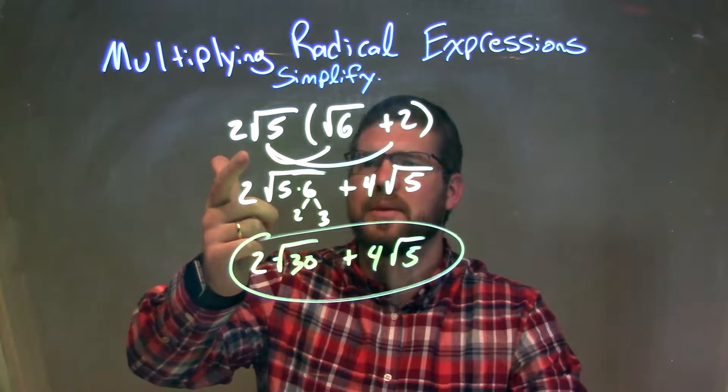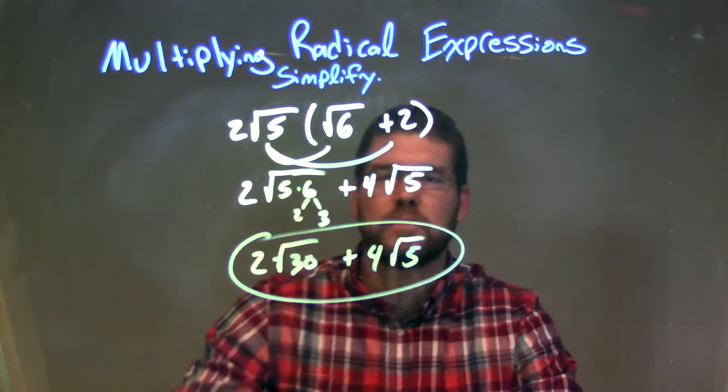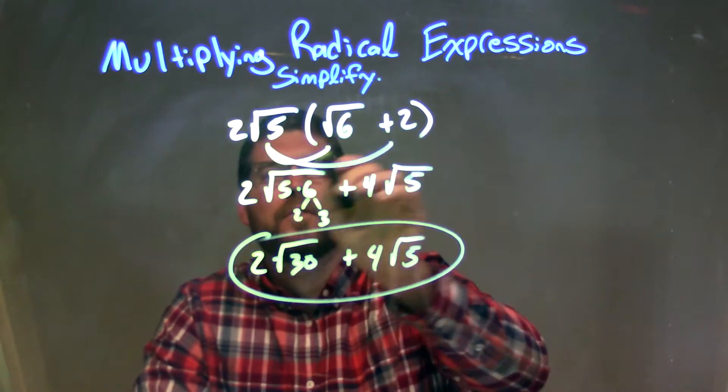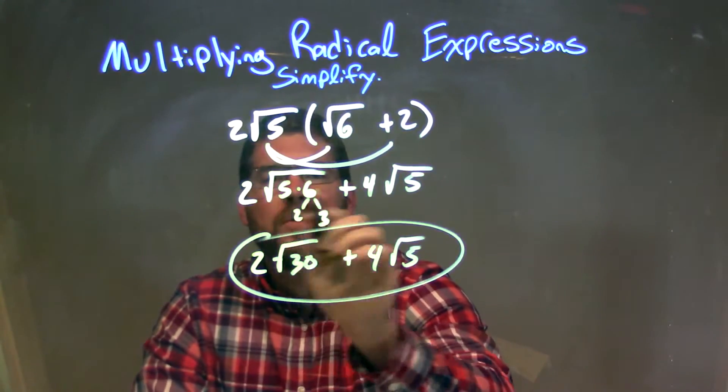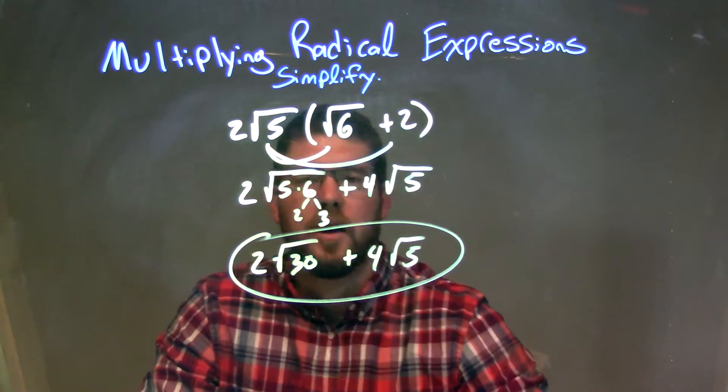So let's recap. We're given 2 times the square root of 5, times parentheses, square root of 6, plus 2. We're distributing the 2 square root of 5 with both parts, leaving us 2 times the square root of 5 times 6, plus 4 times the square root of 5.